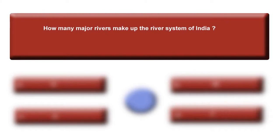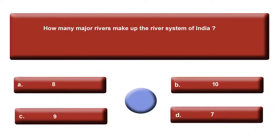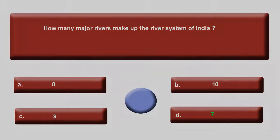The next question is: How many major rivers make up the river system of India? Options are: A, 8; B, 10; C, 9; or D, 7. Time is finished. The answer is D, 7.